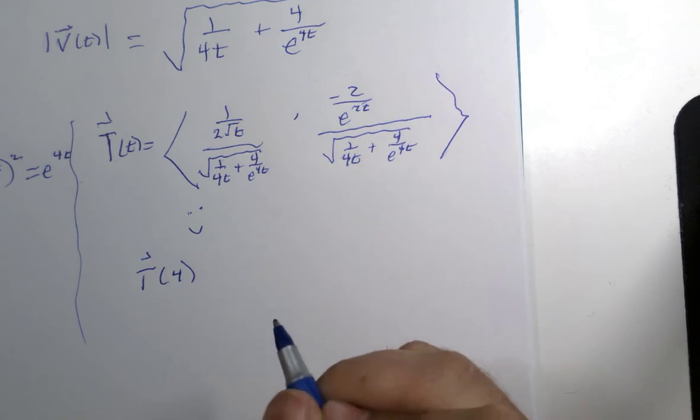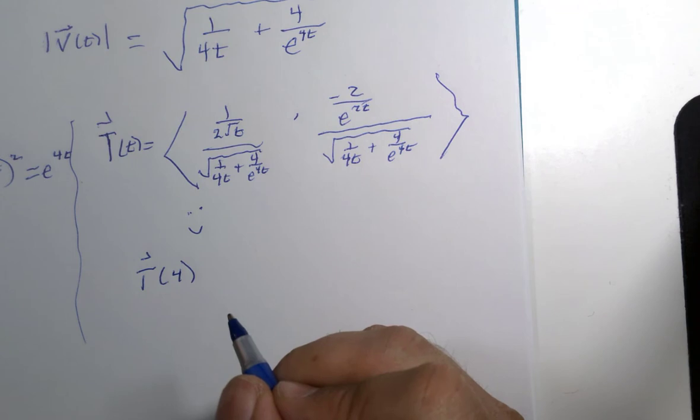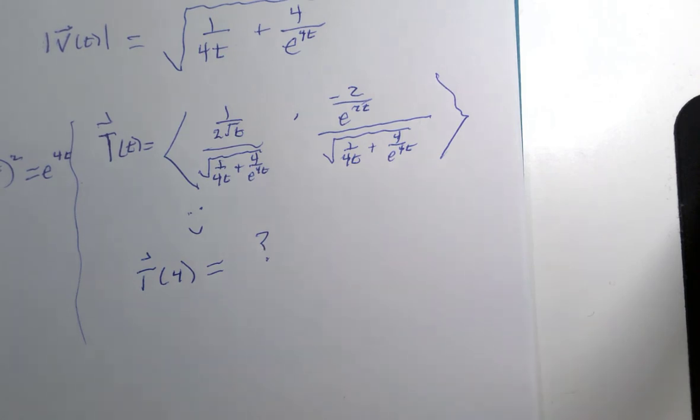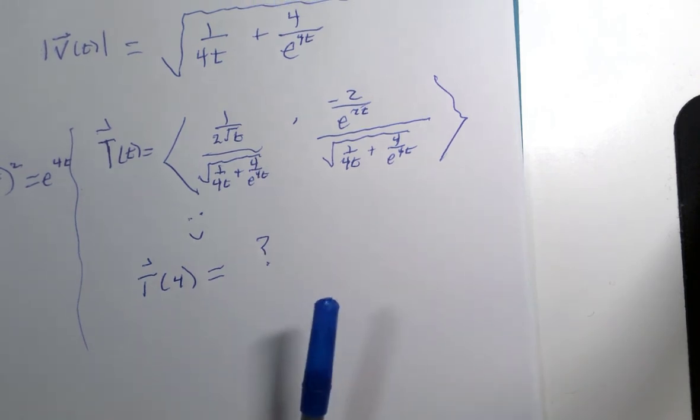If we wanted to calculate the value at a particular number, this wouldn't be nearly as traumatic. For instance, if you wanted to calculate this unit tangent vector at time equals 4, it would be a little bit easier to simplify this. Probably a lot easier, but it still would not be fun for an elementary algebra student. I'm going to leave this as a question mark, something for you to have fun with. Until next time.